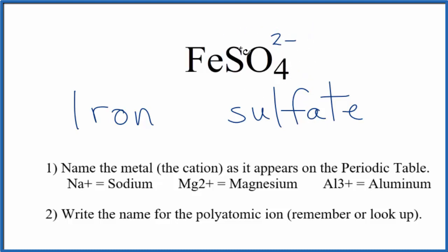2 minus on the whole sulfate ion means that the iron has to have an ionic charge of 2 plus for these charges to balance out, give us a net charge of zero. So we need to show this 2 plus in the name for iron sulfate.